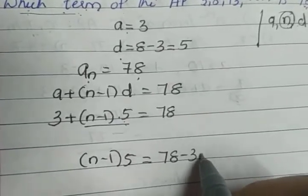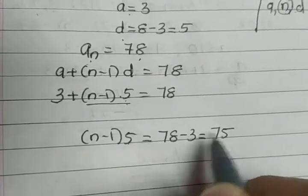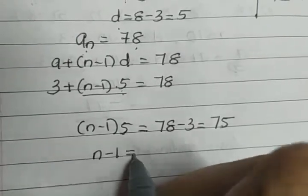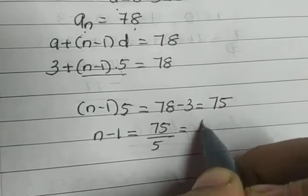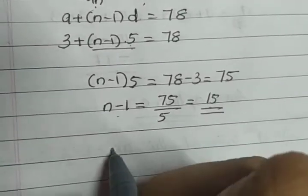Again, take this 5 to the right side rather than opening the bracket. Take this 5 to the right side. So what we will get: n minus 1 is equal to 75 by 5. 75 by 5 gives you 15. So n minus 1 equals 15, and we got the value of n as 16.